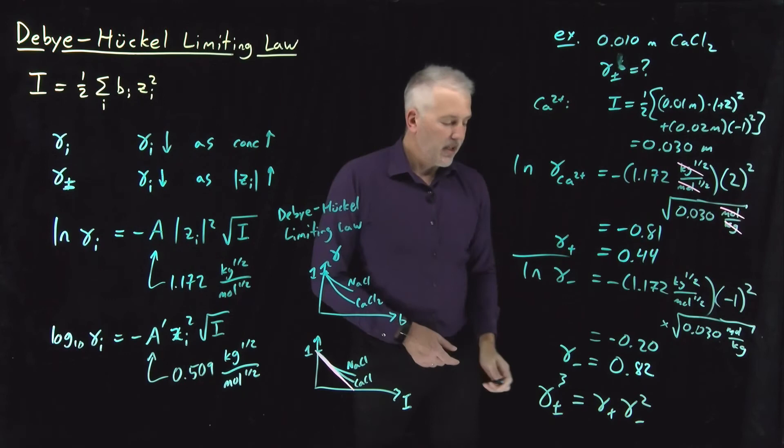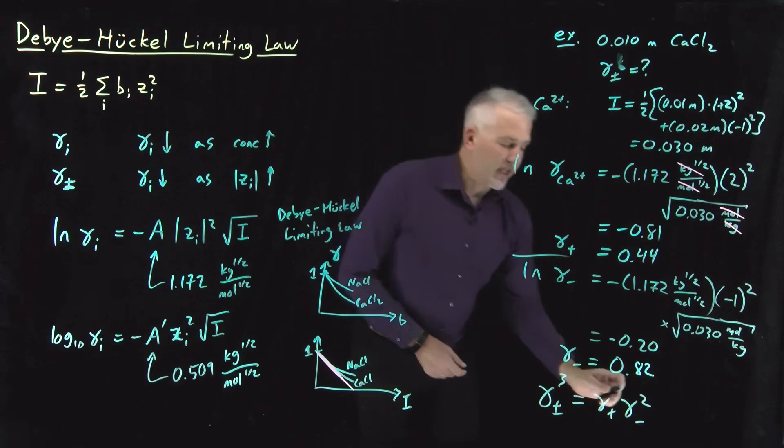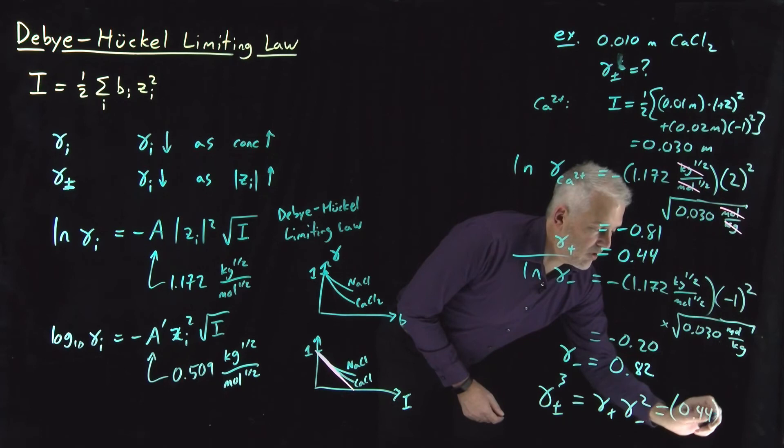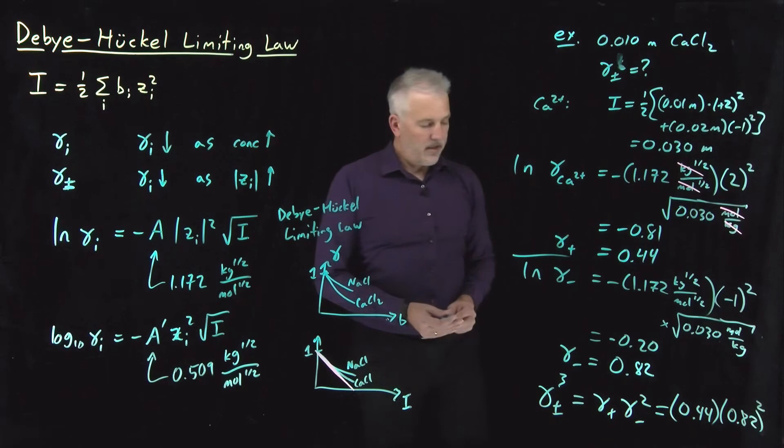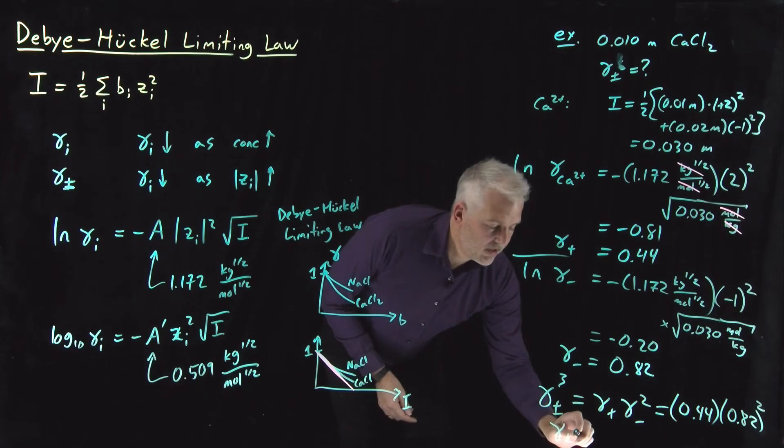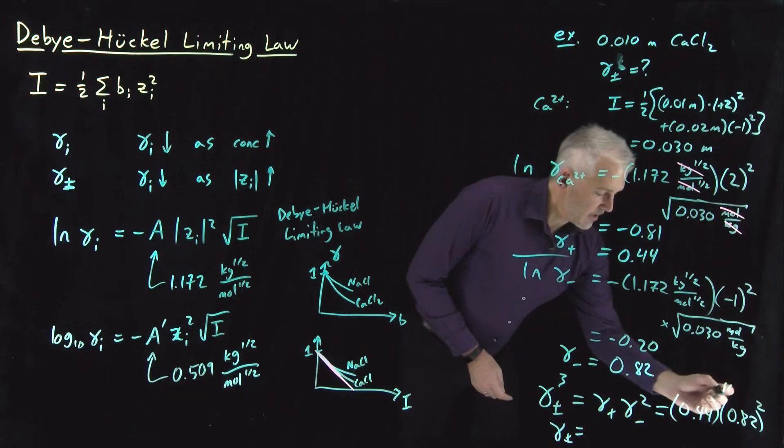So now I combine these two single ion activities, 0.44 for the cation, 0.82 for the anion. So 0.44 to the 1, 0.82 squared. That gives me gamma plus minus cubed. Gamma plus minus is that quantity. So this works out to be,